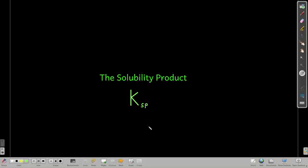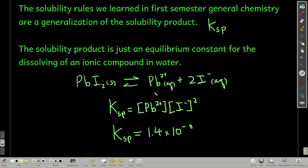In this module, we're going to talk about what's called the solubility product, or Ksp. Back in the first semester of general chemistry, we learned solubility rules. What those really are are just a generalization of what we're talking about now, the Ksp, or the solubility product.